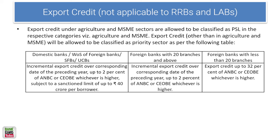Export credit under agriculture and MSME sectors can be classified as PSL in their respective categories. The target for incremental export credit over the corresponding date of the preceding year is up to 2% of ANBC or CEOBE, whichever is higher, with a sanction limit of up to 40 crore per borrower — though there is no such limit for foreign banks. For foreign banks with less than 20 branches, export credit up to 32% of ANBC or CEOBE counts. This topic has not appeared in previous papers yet, but it can.